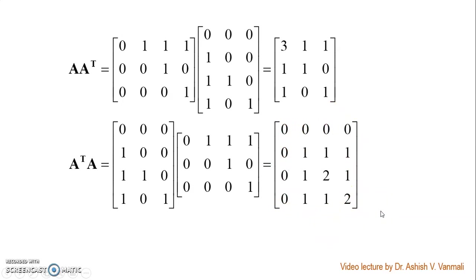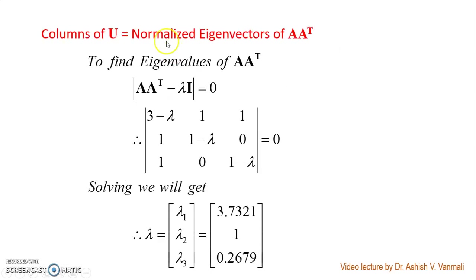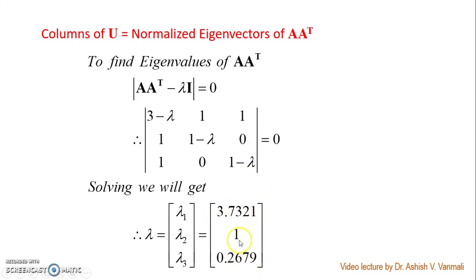To find U, the columns of U are the normalized eigenvectors of AA transpose. Solve determinant(AA transpose − λI) = 0. Substitute AA transpose and solve the determinant equation. The three eigenvalues, arranged from maximum to minimum, are: λ1 = 3.7321, λ2 = 1, and λ3 = 0.2679.